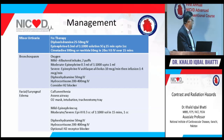For minor urticaria, antihistamines may suffice. Epinephrine and cimetidine, an H2 receptor antagonist, can also be given. If bronchospasm develops, oxygen must be administered immediately. For moderate to severe forms, antihistamines and corticosteroids are used, and H2 blockers should also be considered.